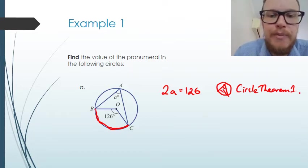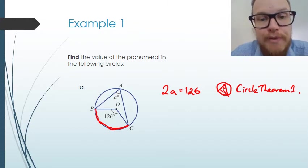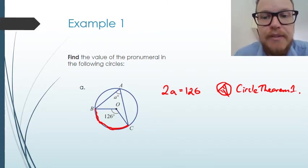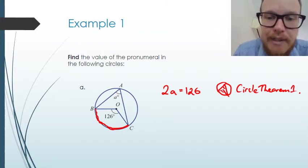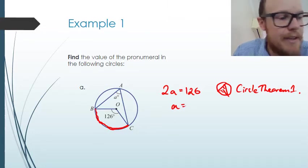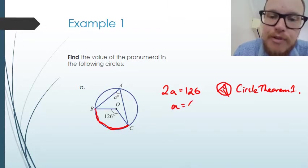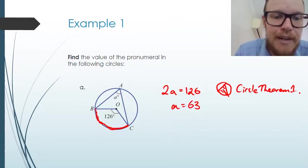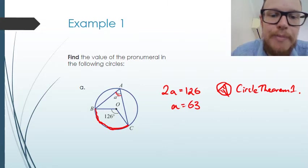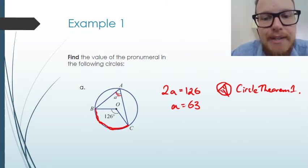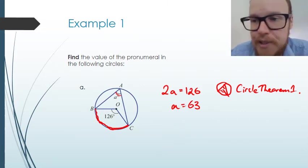Now we've stated the fact and given evidence, we can solve our equation and get A equals 63. So angle BAC is going to be 63 degrees.